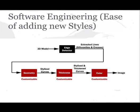Then the thickness module takes the stylized curves as the input and generates thickness points along each curve. Then comes the color module which takes the thickened curves as input and generates the non-photorealistic image. We have provided base classes for implementing the geometry, thickness, and color modules.